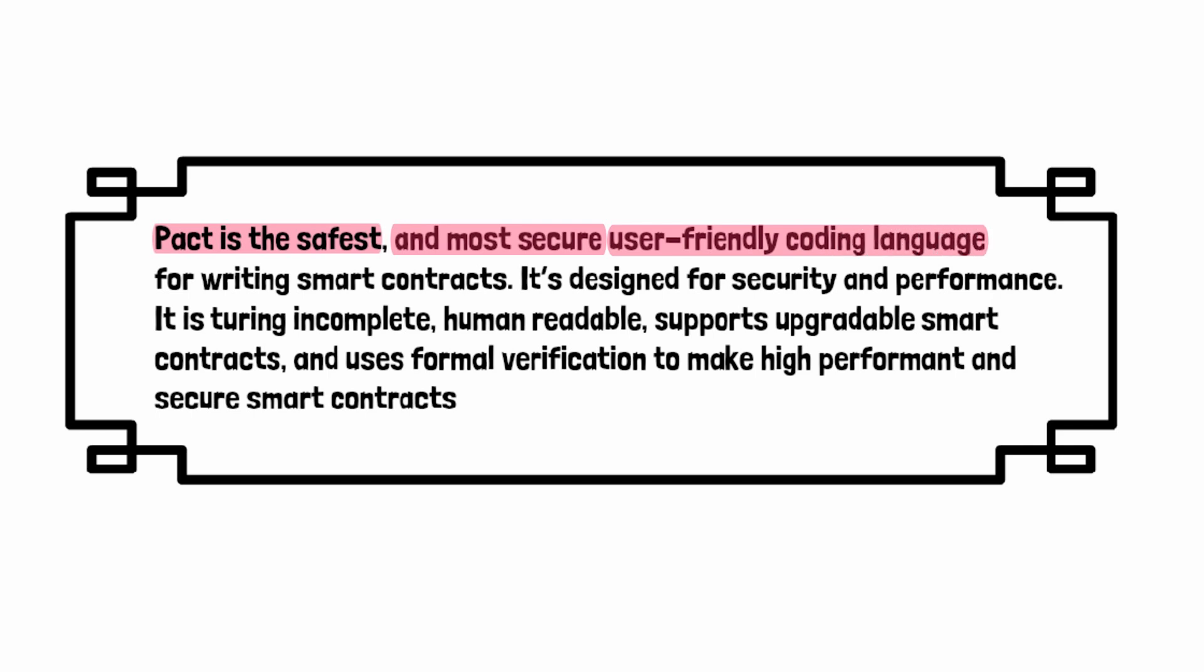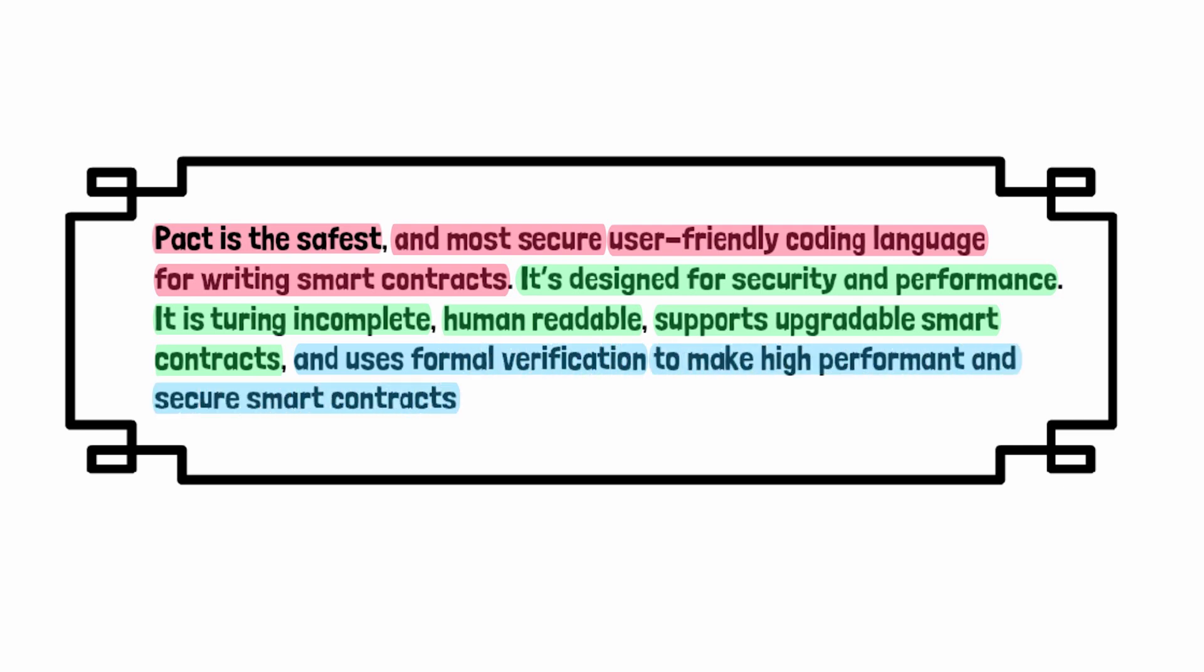Pact is the safest and most secure, user-friendly coding language for writing smart contracts. It is designed for security and performance. It is Turing incomplete, human readable, and it supports upgradable smart contracts, and it uses formal verification to make high performance and secure smart contracts.